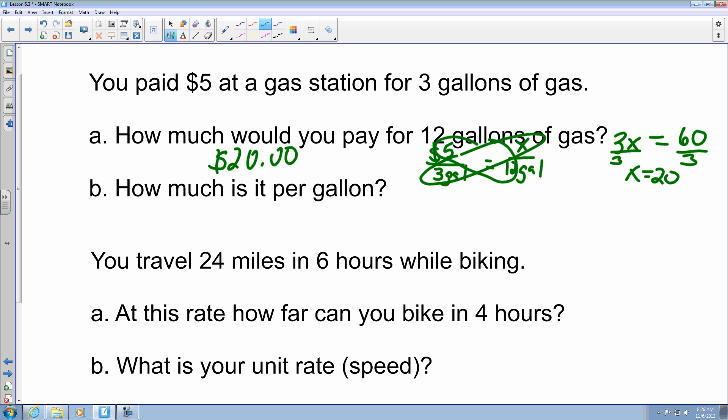The second portion, they want to know how much it is per gallon. Well, that means they want to know how much it is for one gallon. So we want to find the unit rate. The unit rate, which we talked about in 6.1, is we want to have our denominator to have a value of 1. So to do that, you can either pick the $5 for 3 gallons, or you can do the $20 for 12 gallons. I'm going to just put $5 for 3 gallons and divide both of those.